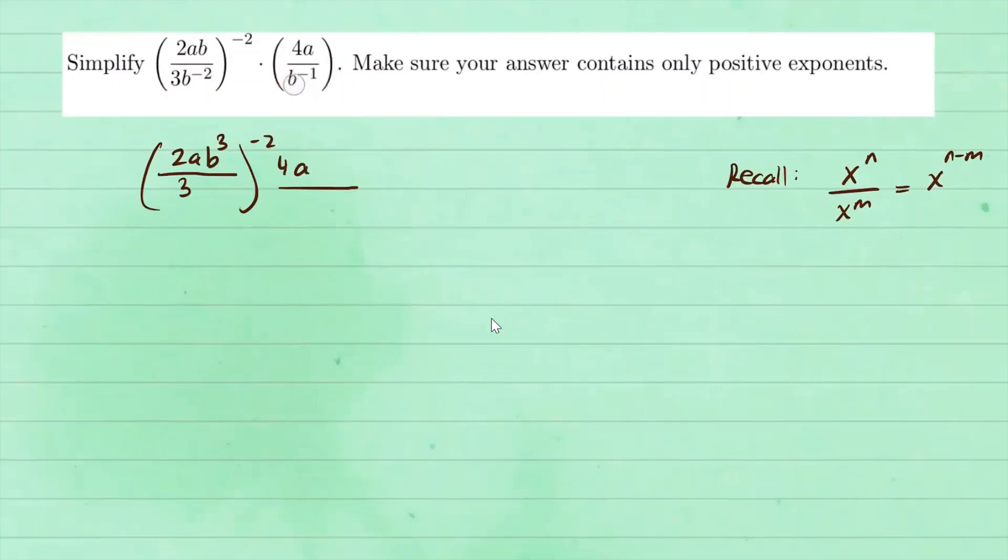This can go on top. We're using another laws of exponents. This will just be b to the one on top. There's nothing on the bottom. We can replace it as one.